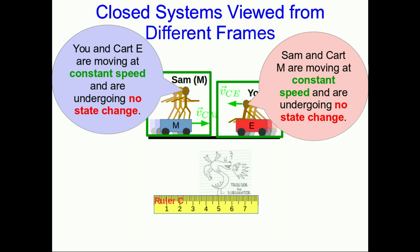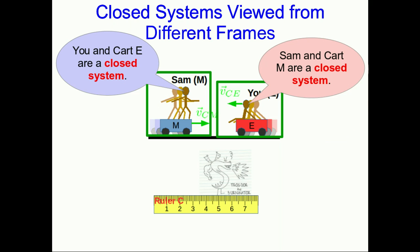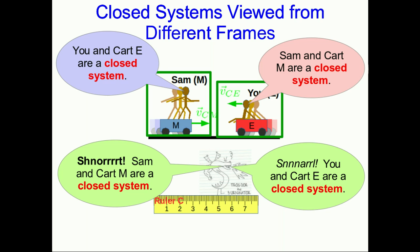According to your measurements, Sam and the cart Sam is on is moving at constant speed and undergoing no state change. And the same goes for Sam's measurements of you. And so you agree with Sam — according to your measurements, Sam and cart M are a closed system, and Sam agrees with you. According to Sam's measurements, you and cart E are a closed system. Trogdor sees you moving at constant speed and undergoing no change of state, and sees Sam moving at constant speed, undergoing no change of state. So Trogdor agrees as well — all of you agree about your systems being closed.